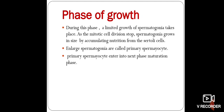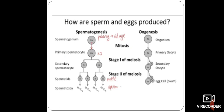The primary spermatocytes enter into the next phase, which is called the maturation phase. During spermatogenesis, the first cell division is of the meiotic type. As a result of meiosis first and second, four spermatids are formed.